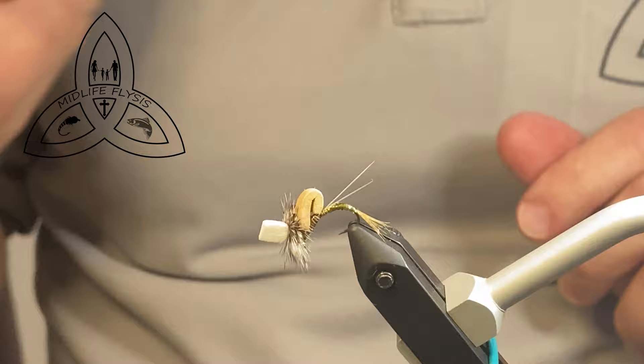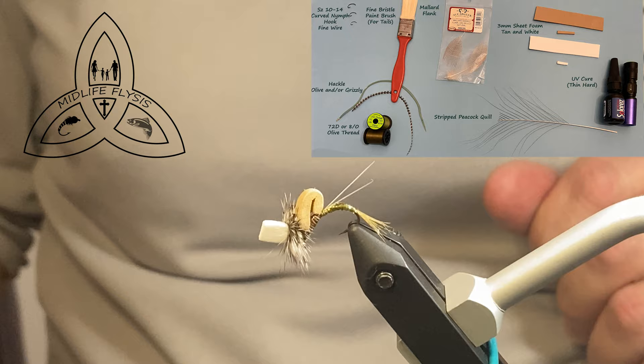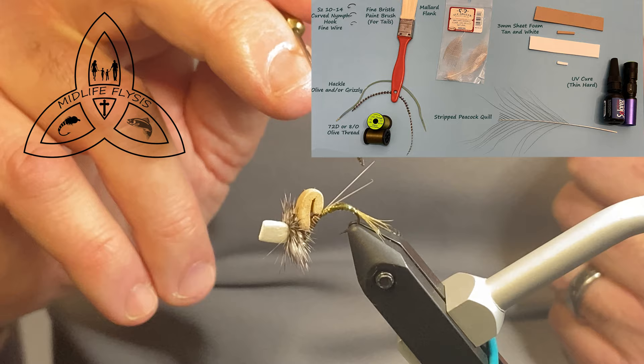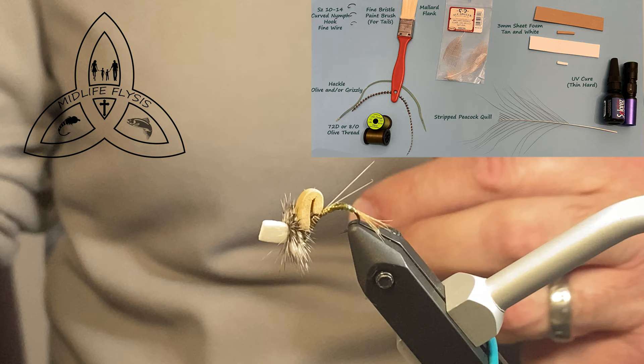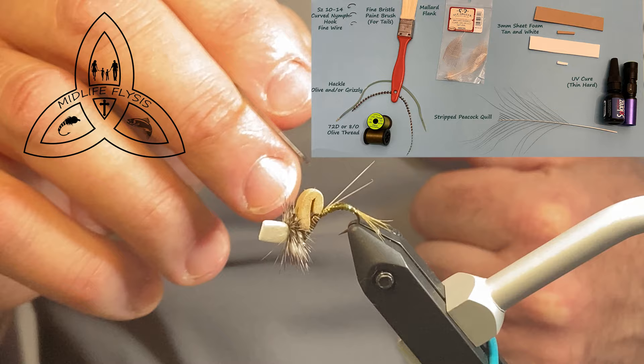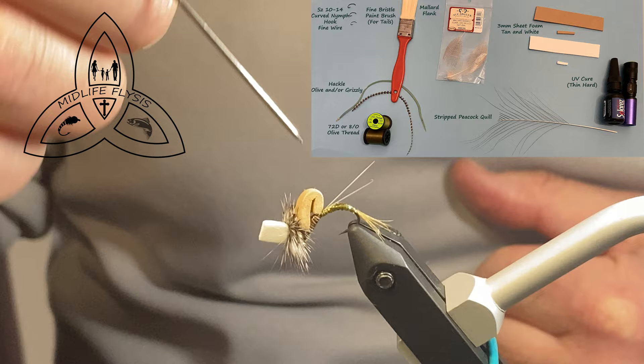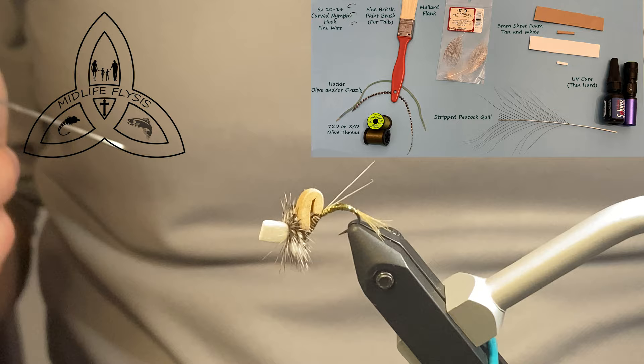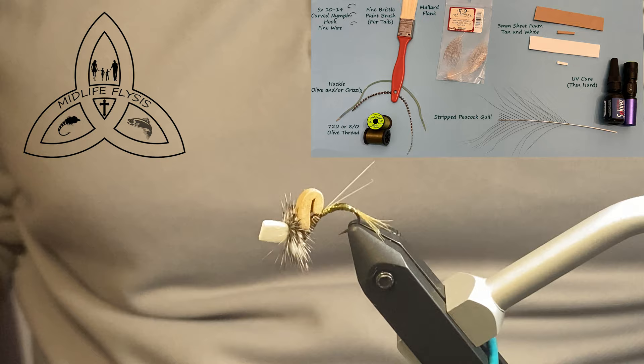I'll put a materials list picture up here on the video, but the parts are basically some mallard flank, bristles from a dollar store paintbrush, this trailing shuck is just pearl tinsel, then some 2mm craft foam for both the hump and the parachute post, regular hackle, some chemically stripped peacock quill for the body, and of course the key ingredient in a lot of flies, Solar Res Ubicure. In this case, I used the thin hard to do all the curing.